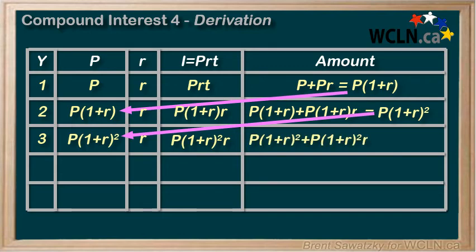Now when we look at this one, we see that we can factor out a 1 plus R squared. So now we end up with P times 1 plus R cubed, and we carry that down to the next line for the principle.